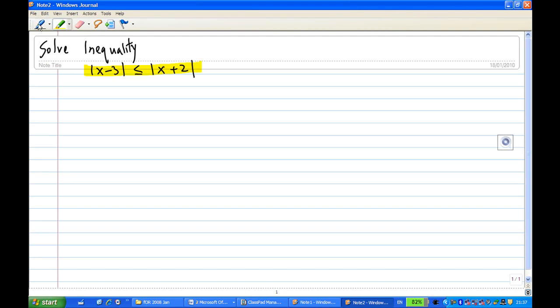Now since both numbers in the inequality are positive, if you square both sides the inequality will still remain. That means absolute value of x minus 3 squared is less than equal to absolute value of x plus 2 squared. Now absolute value of x minus 3 squared is the same as x minus 3 squared without absolute value, and absolute value of x plus 2 squared is the same as x plus 2 squared without absolute value.